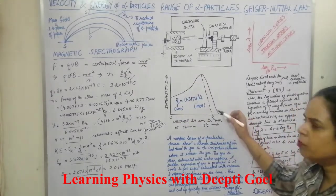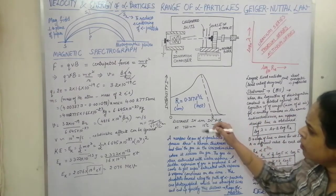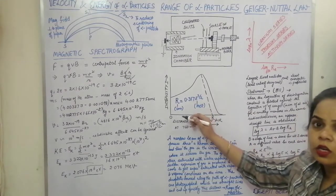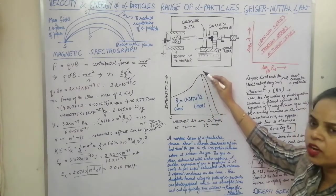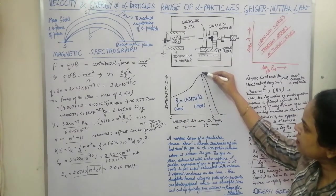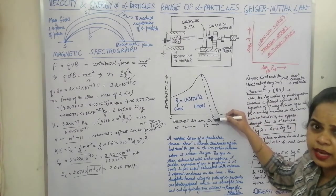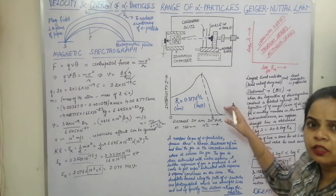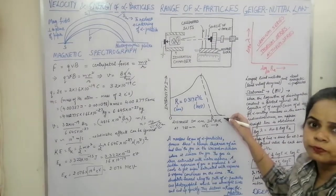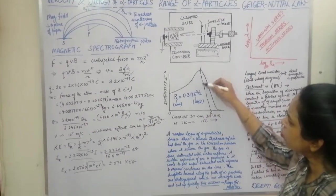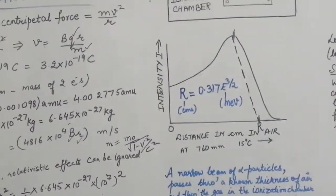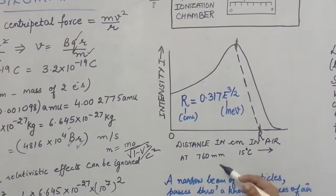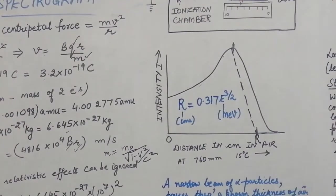A graph is plotted between the intensity of ions formed and the distance. As distance increases, ion intensity increases, reaches a maximum at distance R (the range), then gradually decreases to zero. This range is measured in centimeters of air at a pressure of 760 mmHg and a temperature of 15°C.